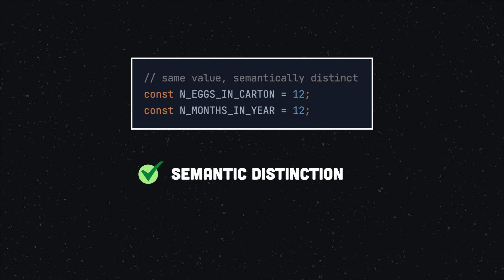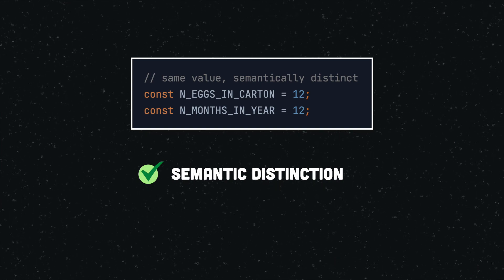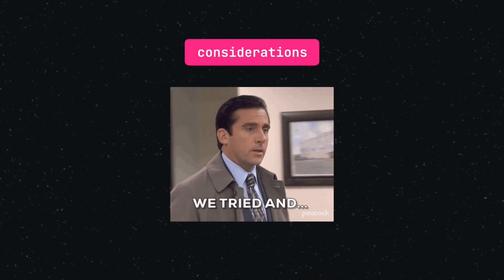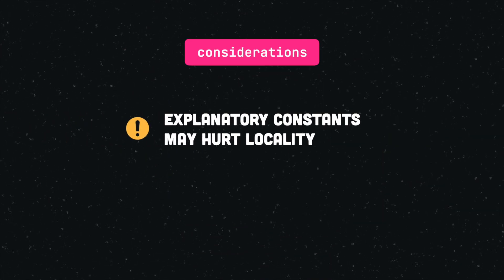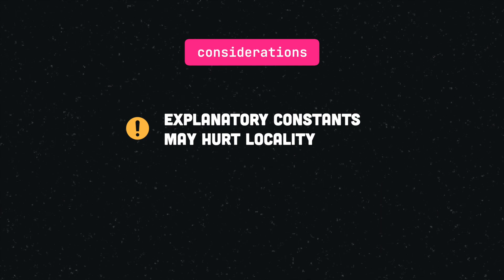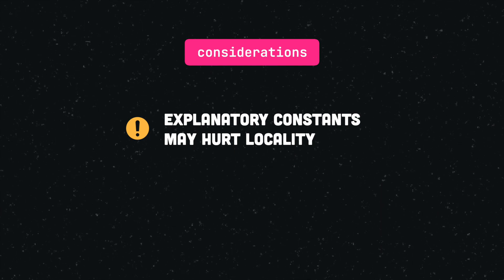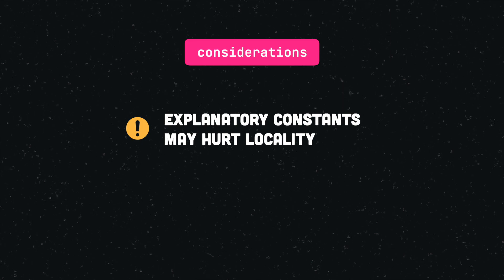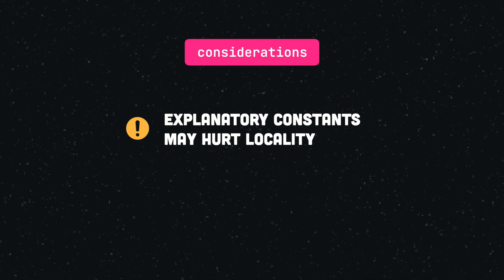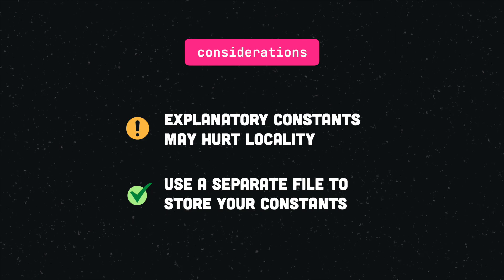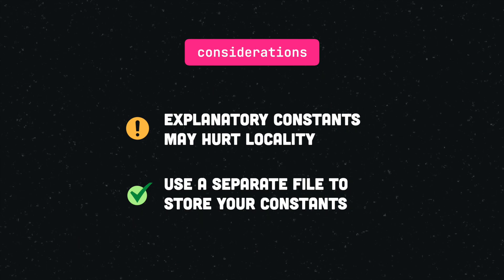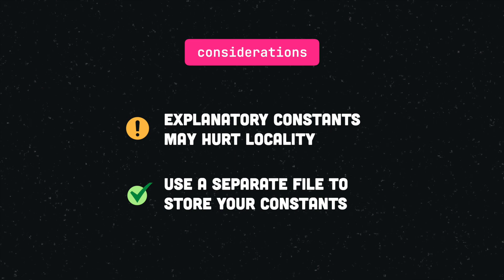Though despite the advantages of using explanatory constants instead of magic numbers, you have to take into consideration that explanatory constants may hurt the locality of your code when they are not defined near their use. For smaller code bases, this is usually easy to avoid. But if you have a lot of frequently used constants, it can be useful to store them in a separate file. In this way, you always know where to find your constants, while still benefiting from their advantages.